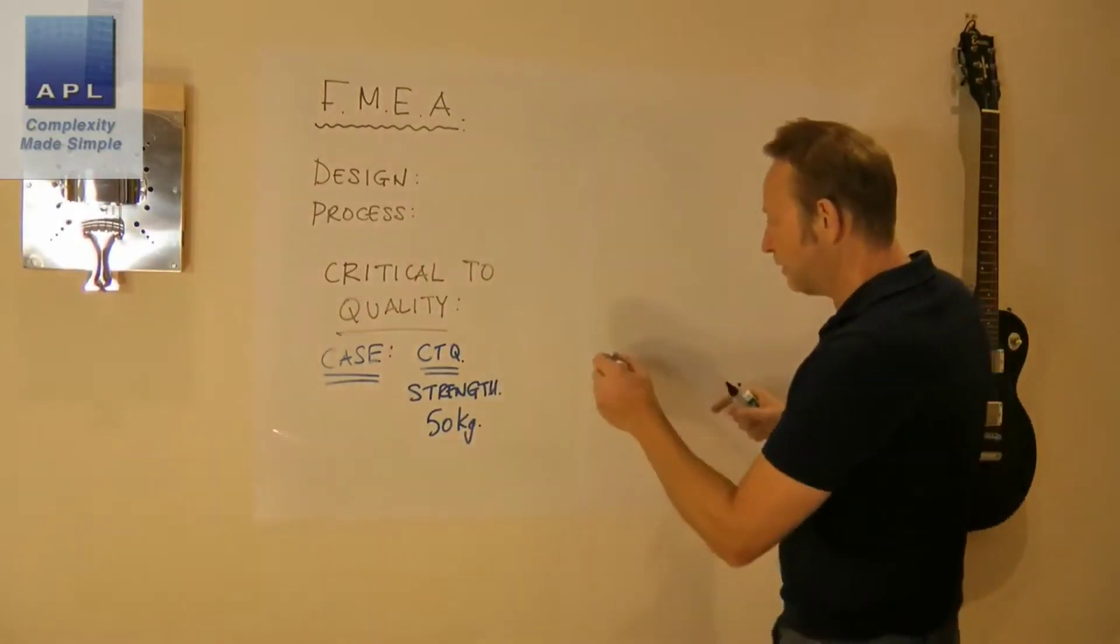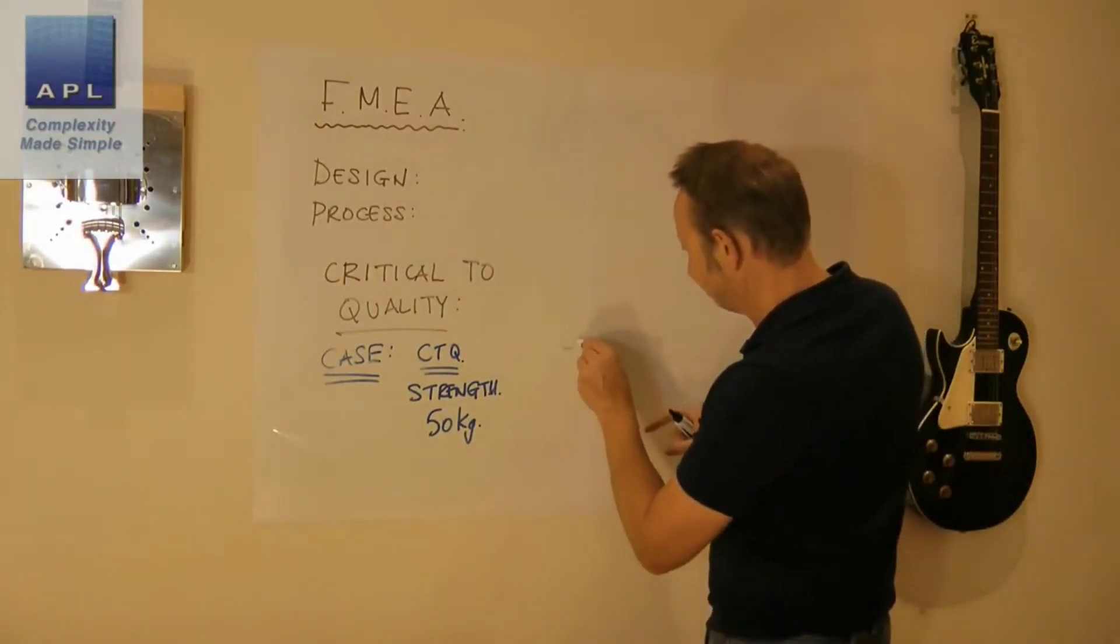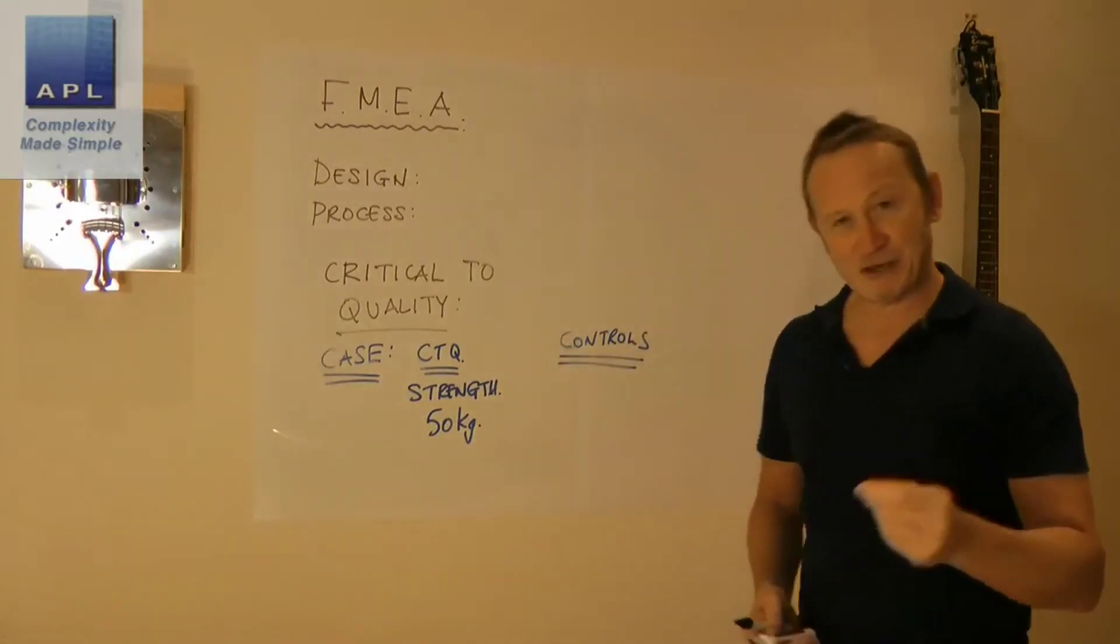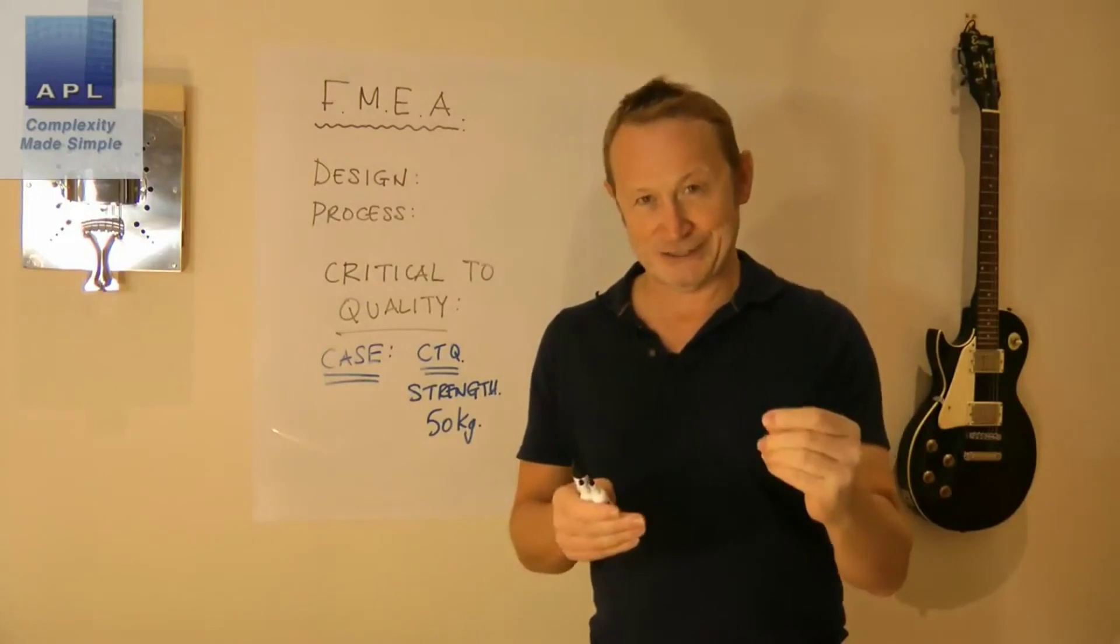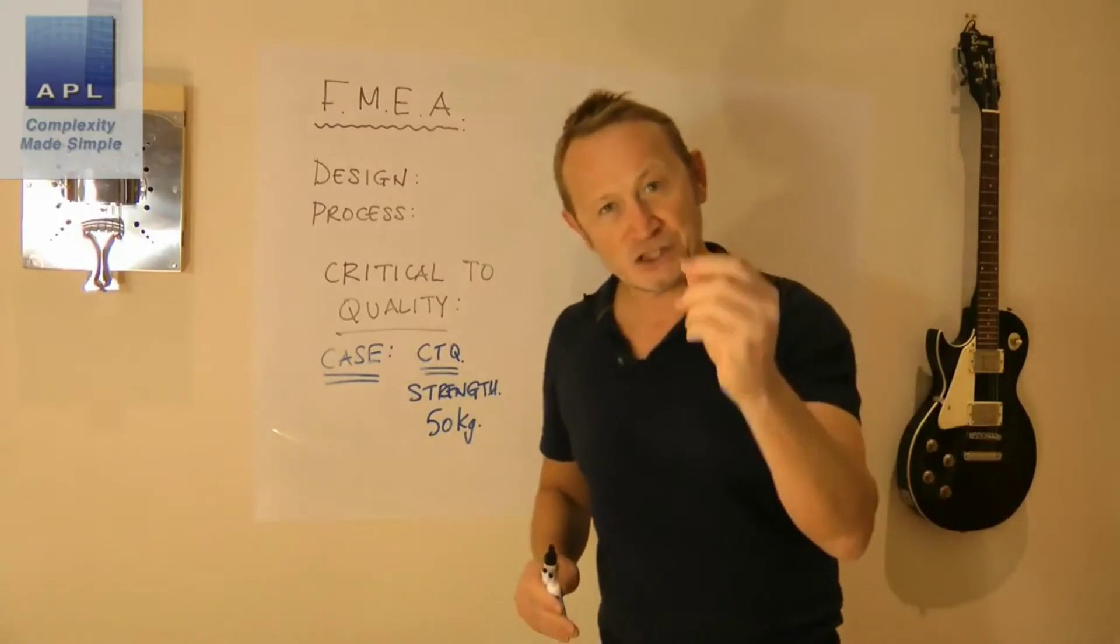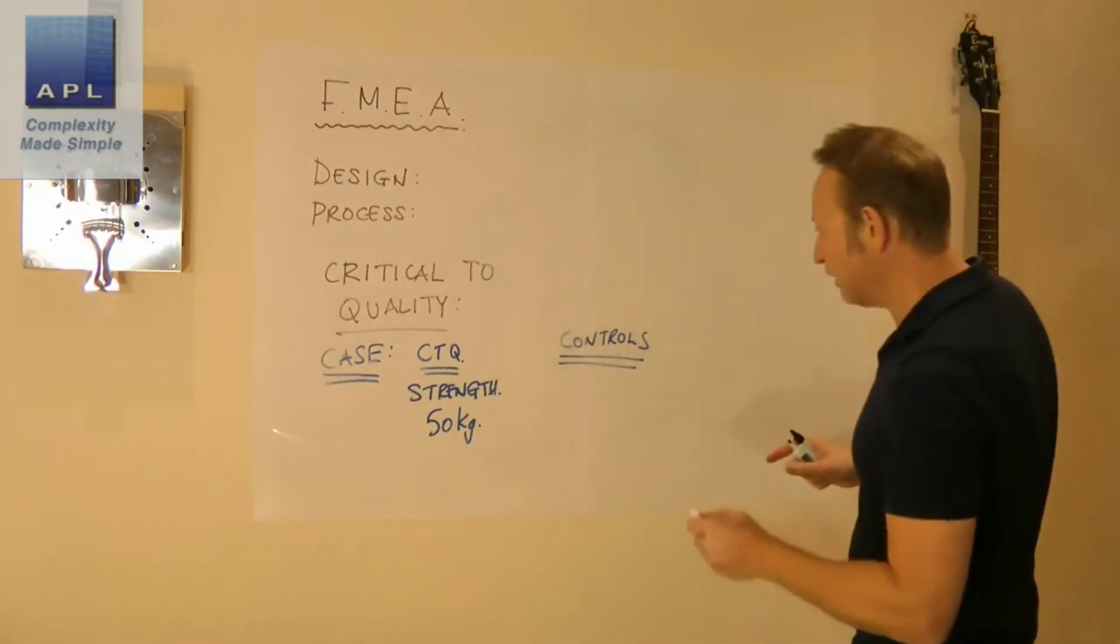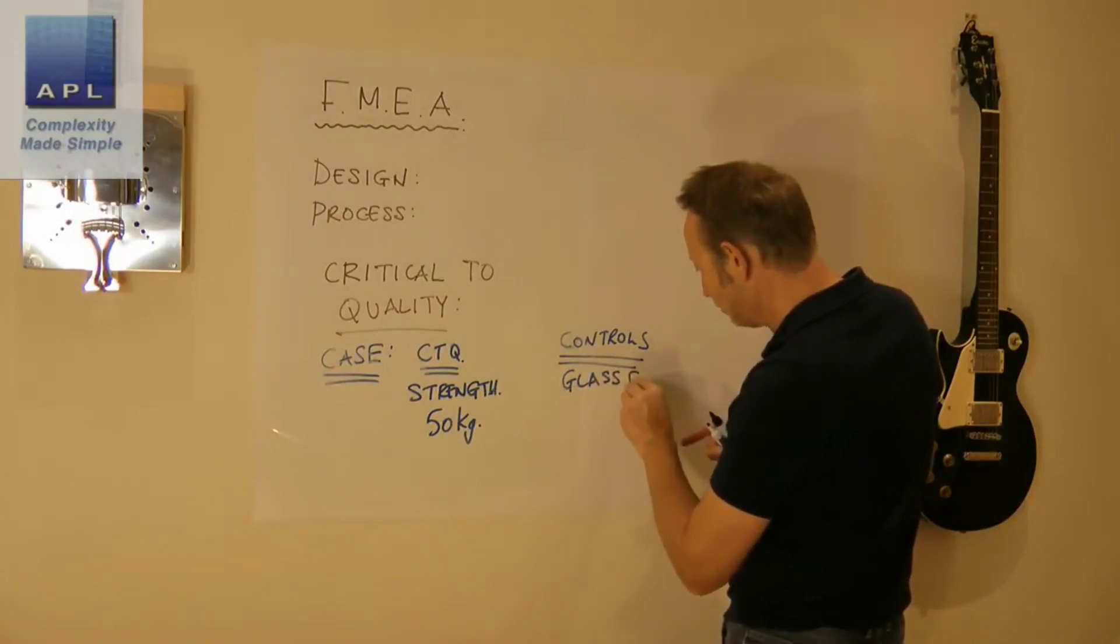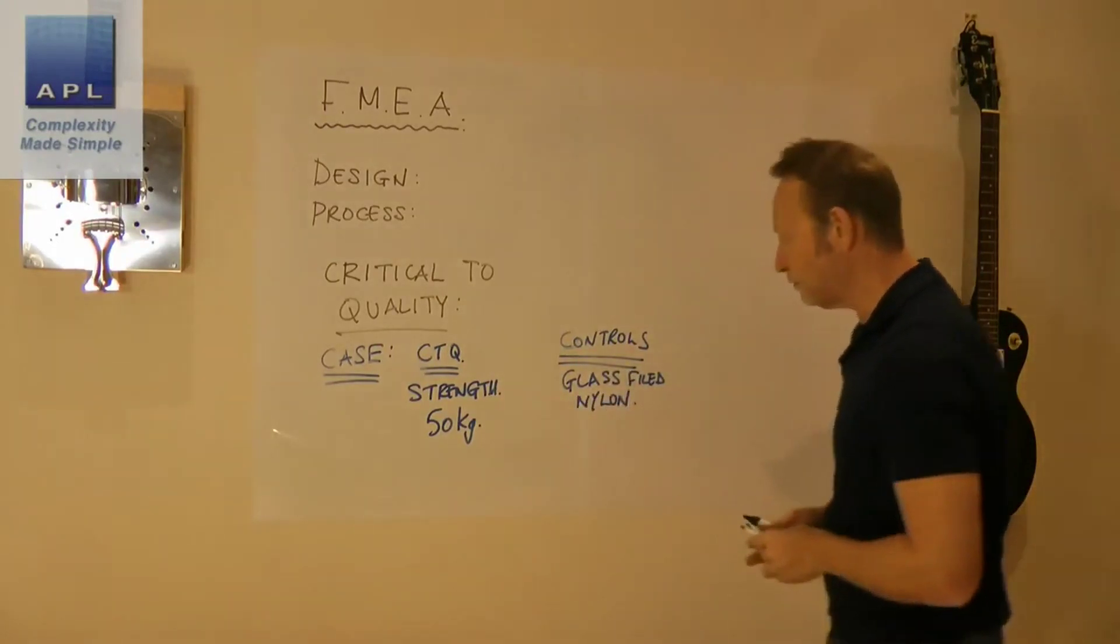So okay, he decides now what are his controls that he's going to put in place? Well, the controls he puts in place—this is his design intent. I've got to deliver this. Here's my design intent.